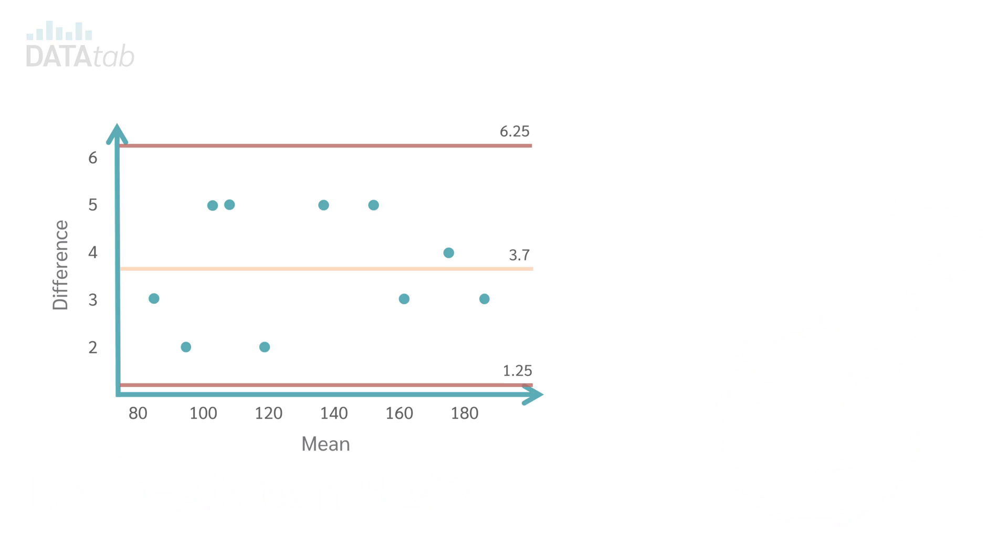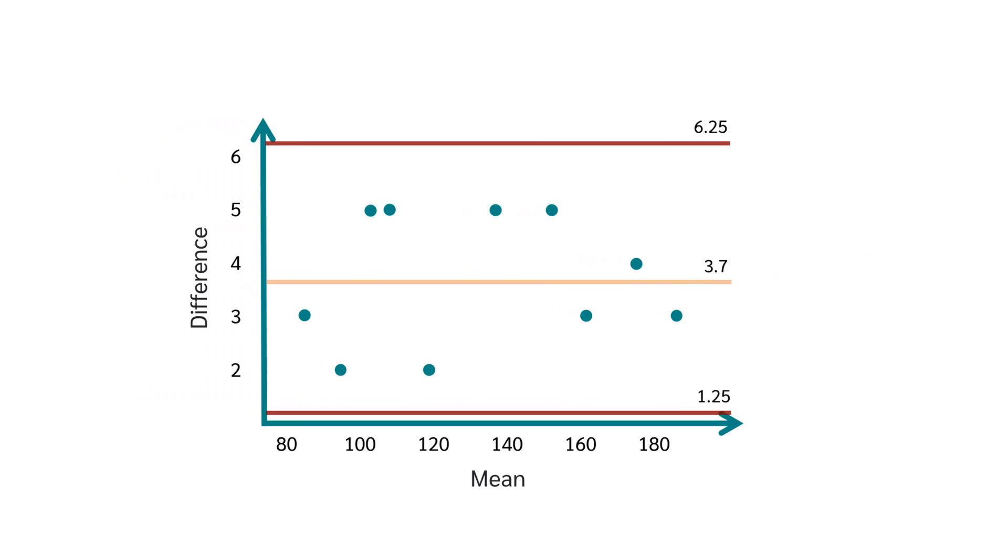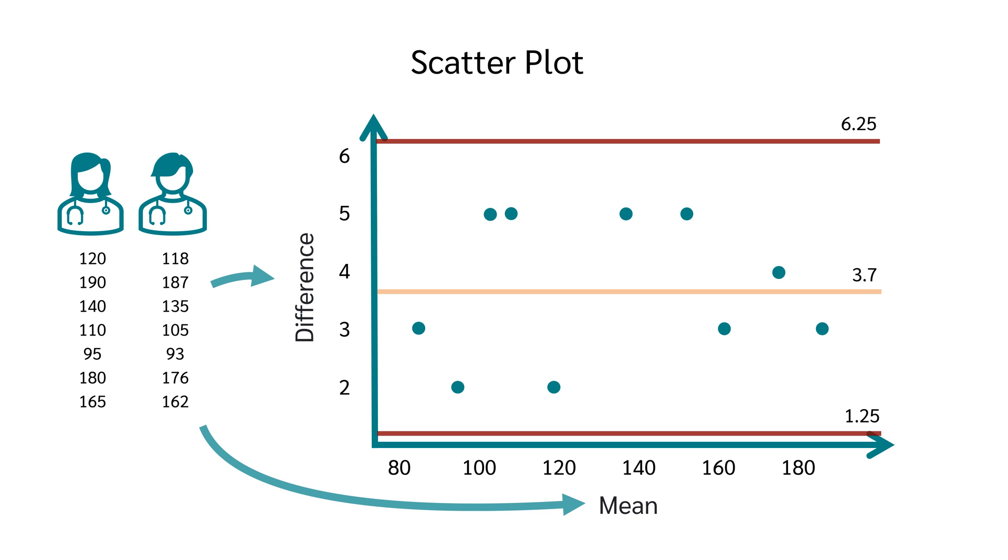What is a Bland-Altman plot? The Bland-Altman plot is a graphical method to compare two measurements. In a sense, a Bland-Altman plot is a scatter plot where the differences between two measurements are plotted against their averages.